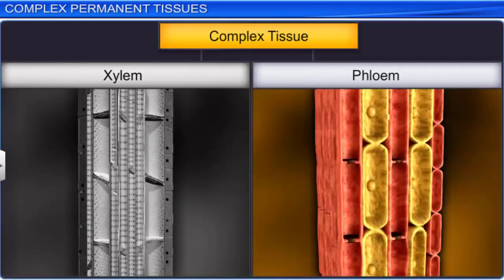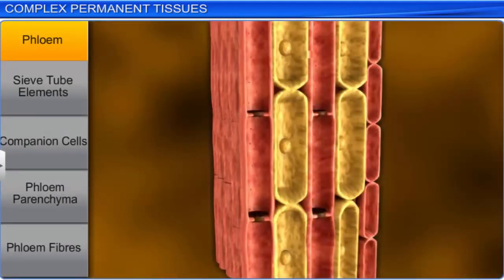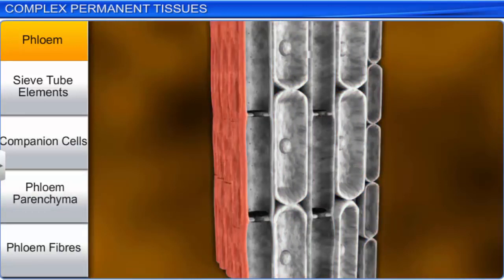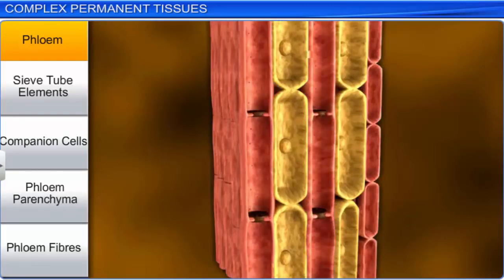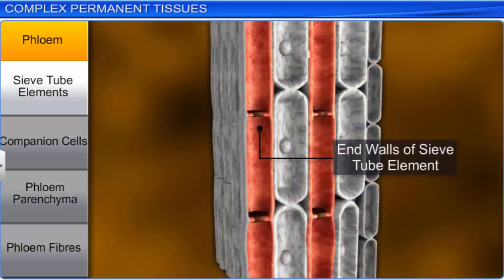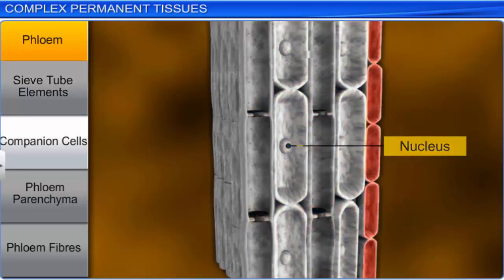The second complex permanent tissue that transports food materials from the leaves to the other parts is known as phloem. In angiosperms, the phloem consists of sieve tube elements, companion cells, phloem parenchyma, and phloem fibers. Sieve tube elements are tube-like structures arranged in a longitudinal manner. They are closely associated with companion cells, which are parenchymatous in nature. The end walls of sieve tube elements are perforated in a sieve-like manner and form sieve plates. The sieve tube elements and companion cells are connected by pit fields present between their common longitudinal walls.